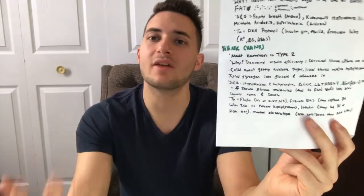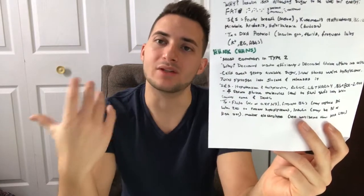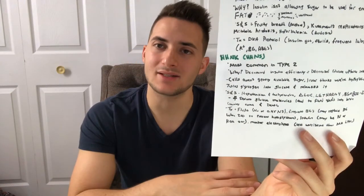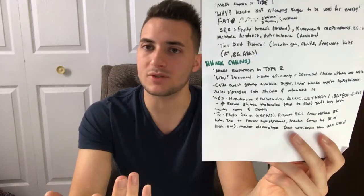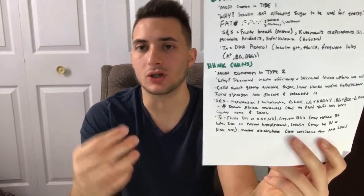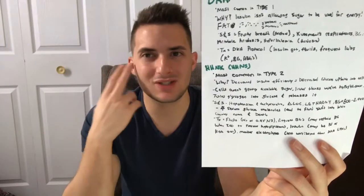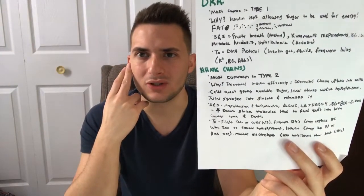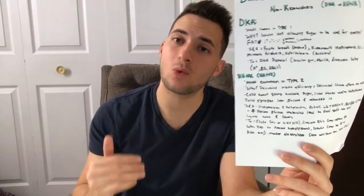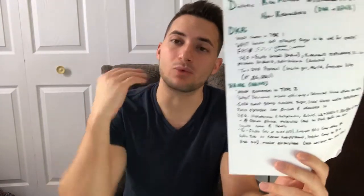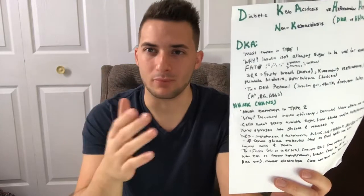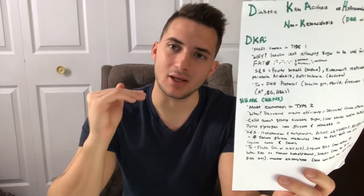Treatment for HHNK: we give them fluids to rehydrate, get frequent blood sugars, and start insulin — sometimes an insulin infusion, sometimes a high sliding scale. Fluids are sometimes normal saline, sometimes half normal saline. When their blood sugar gets to about 250, the provider may decide to replace blood sugar — give them dextrose, D5 — which sounds crazy since they came in for too high blood sugar. Why? If we decrease blood sugar too quickly, we can cause fluid shifts that will cause cerebral edema, seizures, or coma. So we monitor blood sugar and drop it at a steady, safe rate.